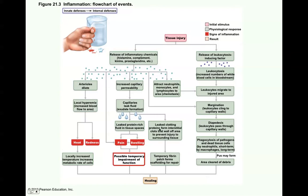Sometimes when there's an infection it kind of walls itself off — the clots between cells wall off the area to prevent injury to surrounding tissue, keeping the infection from spreading and promoting healing. The leukocytosis-inducing factor means there are increased numbers of white blood cells in the bloodstream. Then you have margination — where the leukocytes cling to the capillary walls — and diapedesis, where they stick out extensions and squeeze through the capillary walls. They then go to the area and engage in phagocytosis of the pathogens and dead tissue cells.